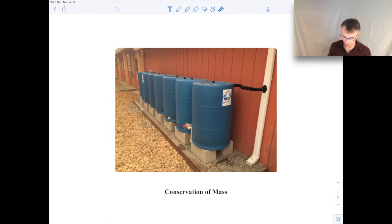If you take a look at the screen you'll see a picture of some rain barrels and I use this picture because it involves conservation of mass. What happens is we have rain that comes down through the downspout coming off of the roof of the building here and there's a diverter located right here in the downspout.